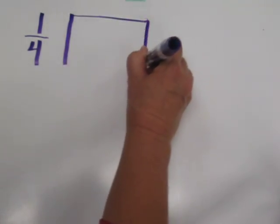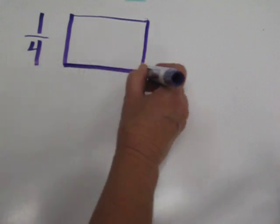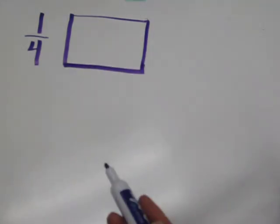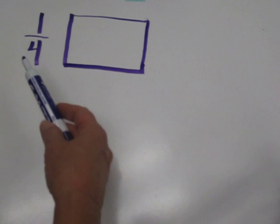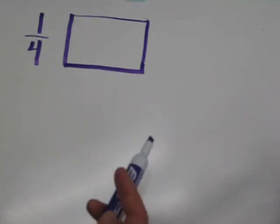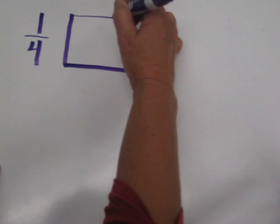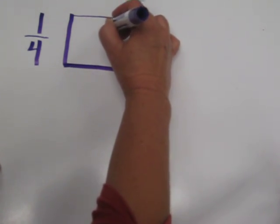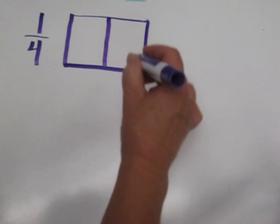We're going to start by drawing a rectangle, and I'm going to tell you another little trick about drawing fractions. When the denominator is an even number, then it's appropriate to divide your shape, no matter what it is, right down the middle at first.